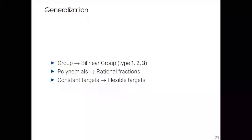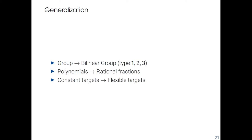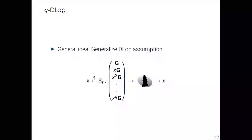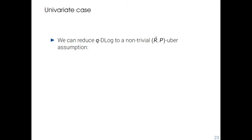Now we have found a way to describe many assumptions. We can reformulate our problem as: is it possible to reduce DLOG to any non-trivial Uber assumption? Unfortunately we can't do this directly. But if we look at a more general definition of DLOG, which is QDLOG — analogous to DLOG except the adversary receives all X^i·G to solve the DLOG problem — we could have some interesting results. To show our results I will focus on a simple case: the univariate case, where there is only one indeterminate.